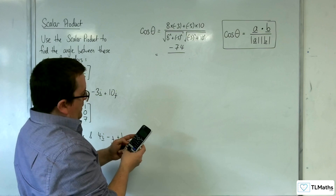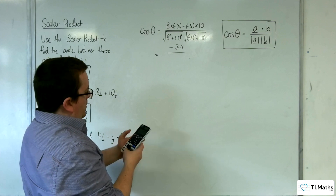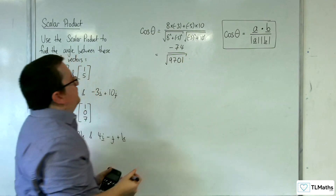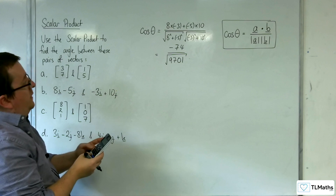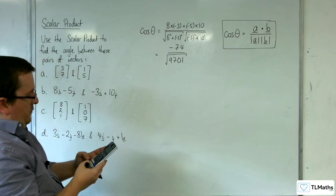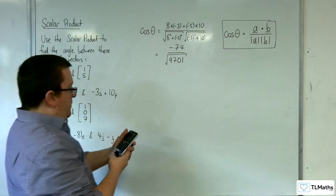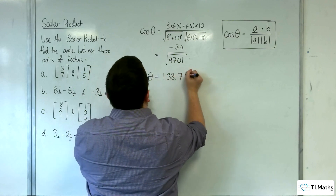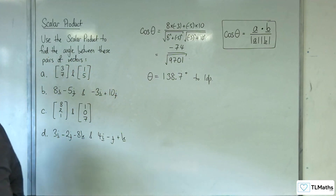So that's 64 plus 25, times 9 plus 100, giving the square root of 9701 in the denominator. Then we've got minus 74 divided by the square root of 9701, and then inverse cosine of that. We should get that the angle is 138.7 degrees to one decimal place.